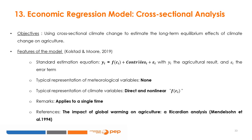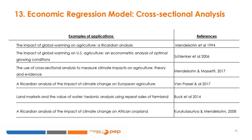Cross-sectional regression requires that farmers have fully adjusted their investments and management practices to maximize production in the climate they face, as long as the climate differences observed are assumed to be stable in the long term. The standard equation for a unit of analysis i takes the form: yi (agricultural result) = f(ci) + ctrl_i + ε_i, where f(ci) represents climate variables. These analyses do not use meteorological variables, and climate variables can be introduced directly into the model in a non-linear way.